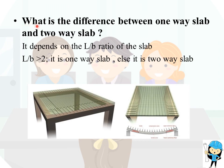The first question is: what is the difference between one-way slab and two-way slab? It depends on the L/B ratio of the slab. If L/B is greater than 2, it is called a one-way slab. If L/B ratio is less than 2, it is called a two-way slab. The other important difference is that the one-way slab is always supported on two sides only — that is, on the longer sides.